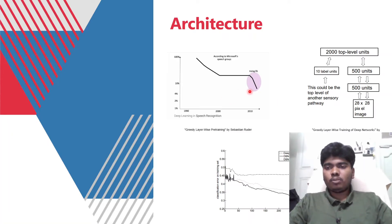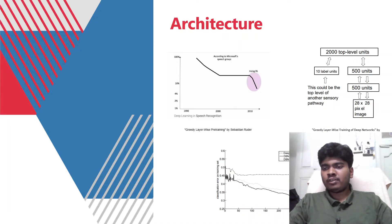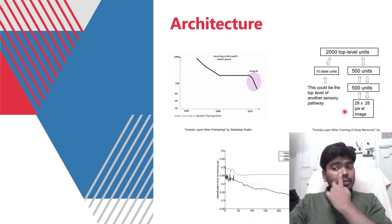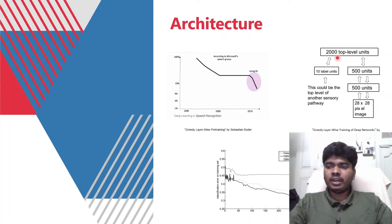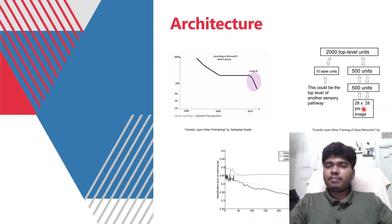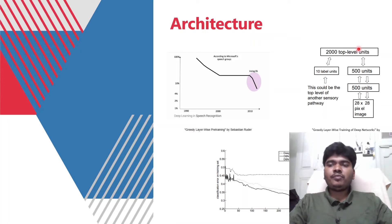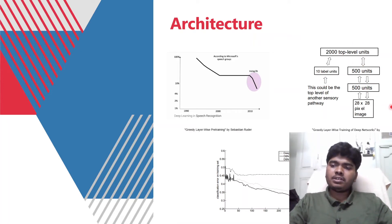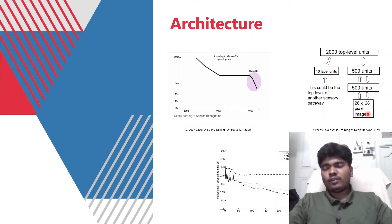In Yoshua Bengio's training of deep networks, he considers 500 units at each level. These 500 units, when an activation function is applied to 2000-level units, produce outputs whose combination produces a pixel image of 28x28 size. Here we can also see a fast learning algorithm for Deep Belief Nets.